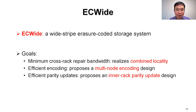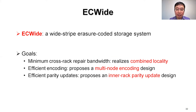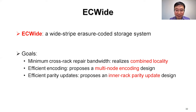To address the three challenges, we designed EC-wide, a wide-stripe erasure-coded storage system with three goals. The first is to minimize the cross-rack repair bandwidth by realizing combined locality. The second goal is efficient encoding by proposing a multi-node encoding design instead of single-node encoding. The third goal is efficient parity update by proposing an indirect parity update design. In this talk, we focus on the first goal due to limited time.